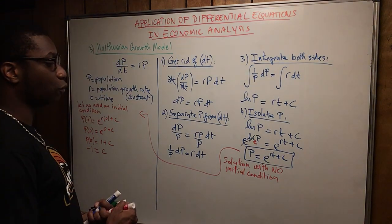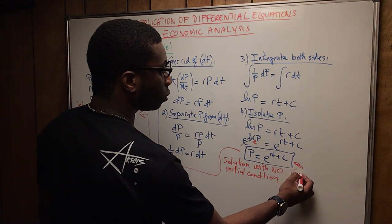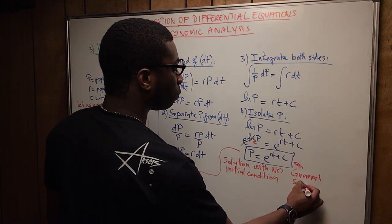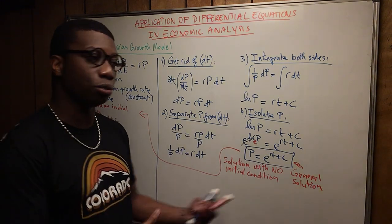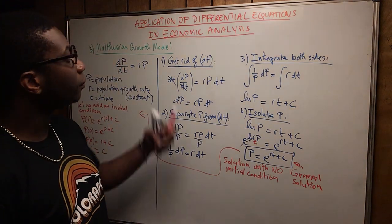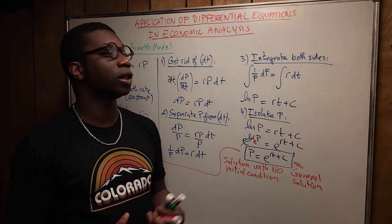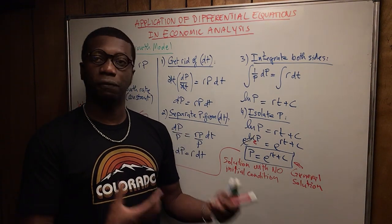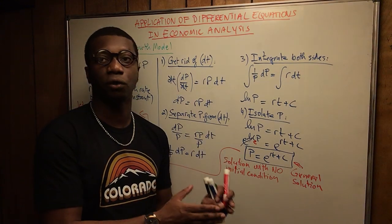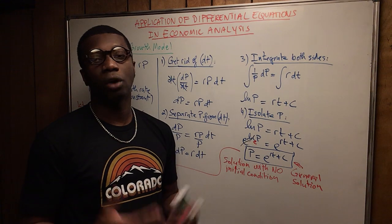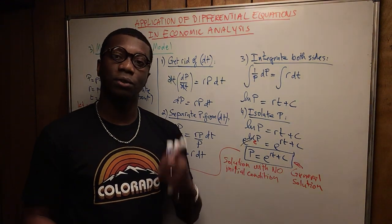That's basically how you solve the Malthusian growth model. If you do not have an initial condition, the general solution to the differential equation is p equals e to the power of (rt plus c). In order to use differential equations in economics, you must first know differential calculus, which enables you to apply integral calculus — and you cannot do differential equations without integral calculus. I hope this video helped you get accustomed to calculus in mathematical economics. Thank you, and see you next time.